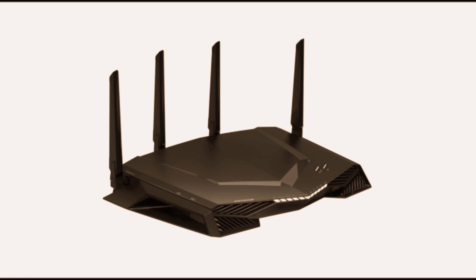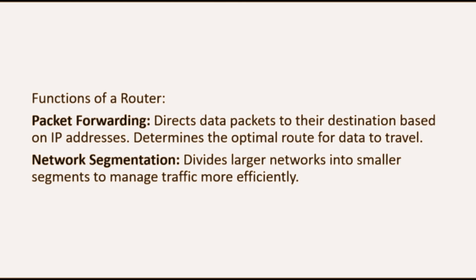Speaking of routers, they are used to route data packets between different networks based on the IP addresses. They operate primarily at the network layer, that is the third layer of the OSI model. The first function of a router is Packet Forwarding, wherein it directs data packets to their destination based on IP addresses and determines the optimal route for data to travel. The second function of a router is Network Segmentation, wherein it divides larger networks into smaller networks to manage traffic more efficiently.